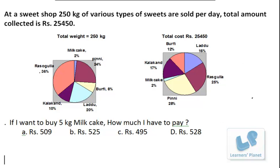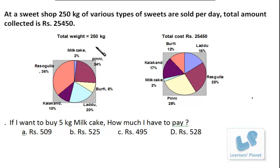Now let's see the next question: if I want to buy 5 kilograms of milk cake, how much do I have to pay? For that, we have to find out the price of one kilogram of milk cake. The total quantity is 250 kilograms, and 2% of that is the milk cake. Most students calculate what 2% of 250 kilograms is right away.